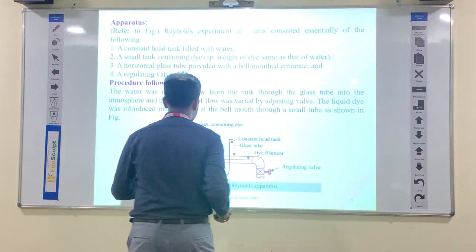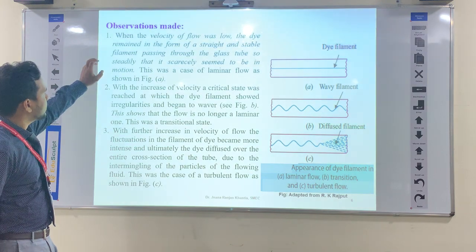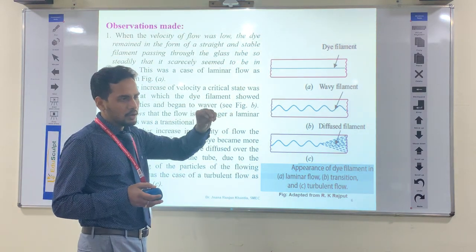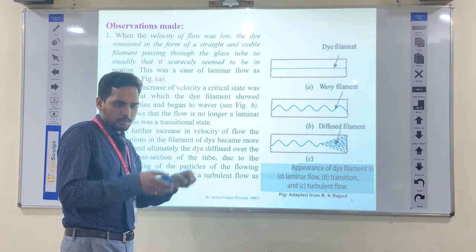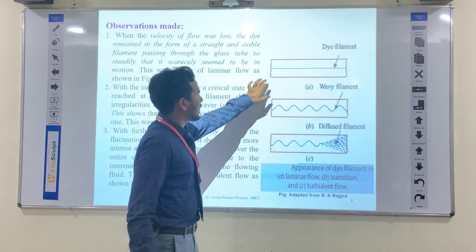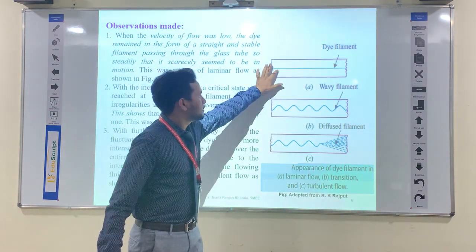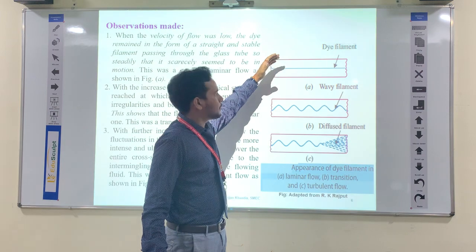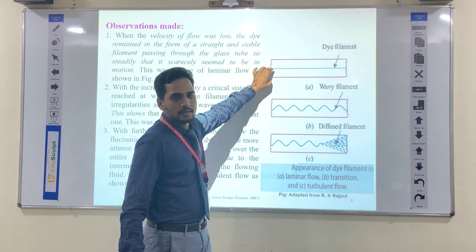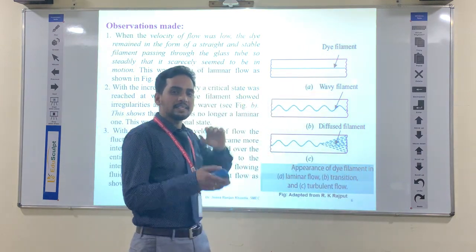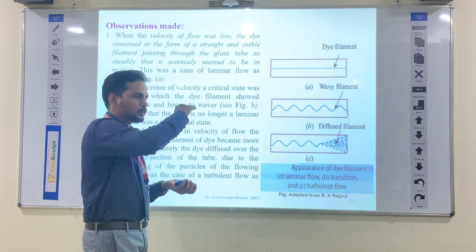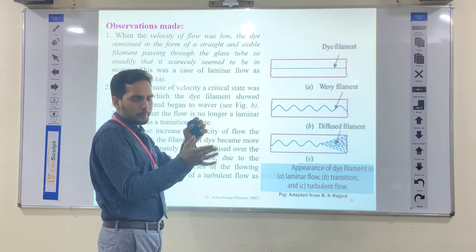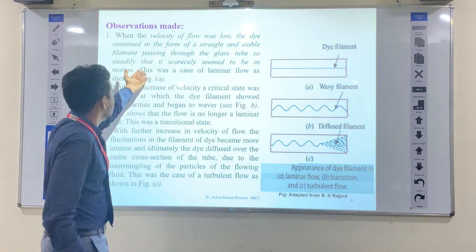When the velocity of flow was low — meaning the regulating valve was opened very slightly — the velocity was very less. At that time, the dye filament appeared as a very firm, straight line with no wave, and no intermixing of layers. That flow is known as laminar flow.